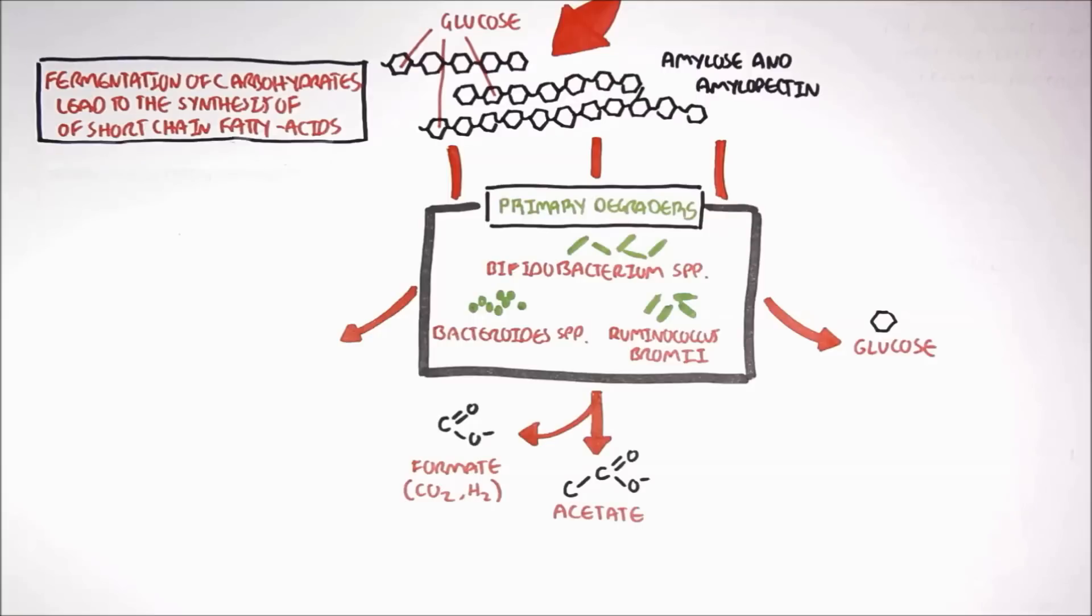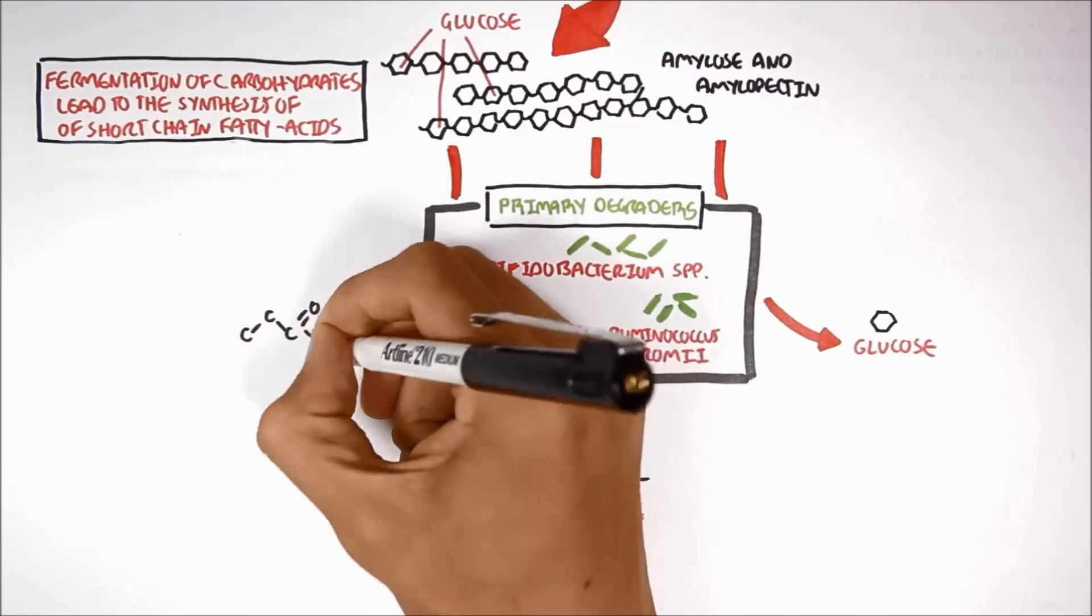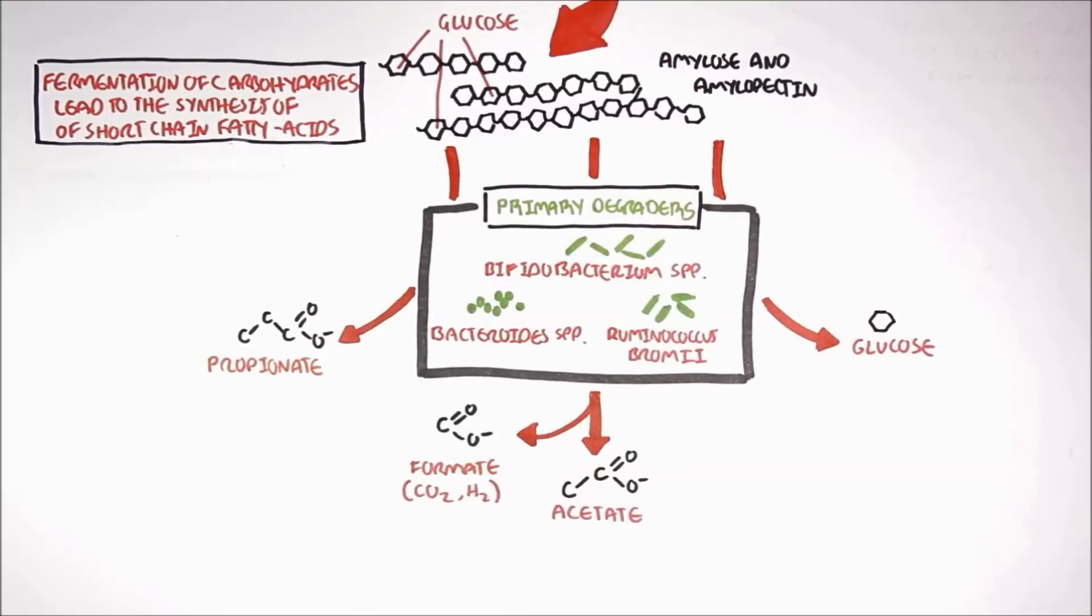Through the fermentation of glucose, the primary degraders can also produce the 3-carbon short-chain fatty acid called propionate, which also form some gases as a by-product.